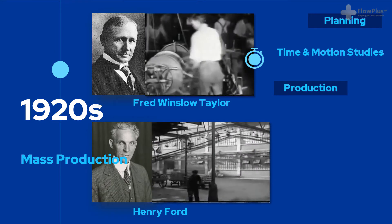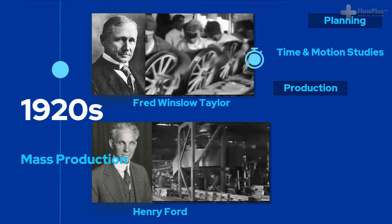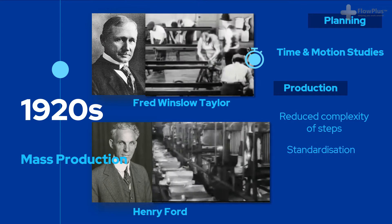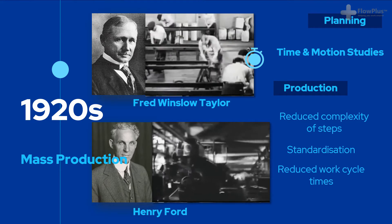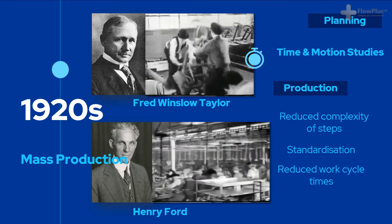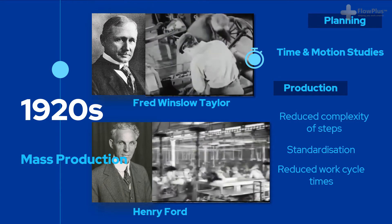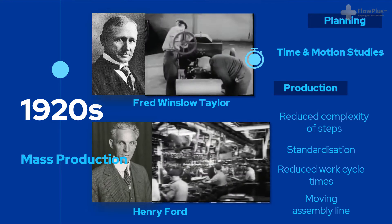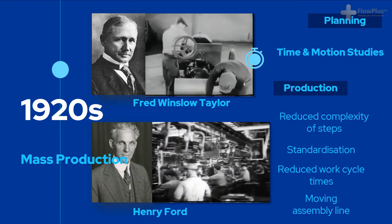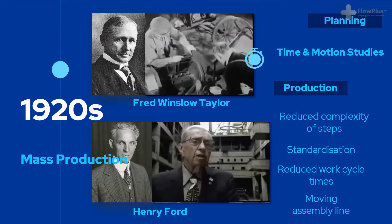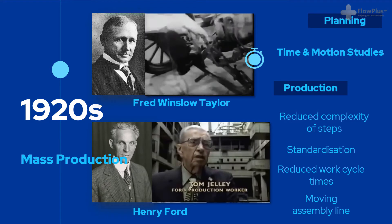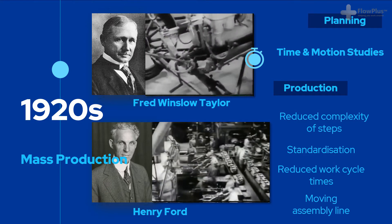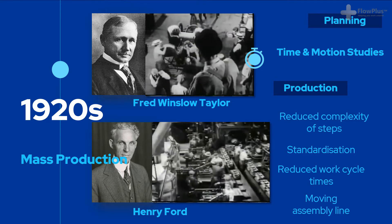Henry Ford then developed on these ideas and decided to make parts highly interchangeable and easy to assemble. By reducing the complexity of steps and standardising dimensions, he eliminated the craftsmanship and revolutionised mass production. He famously reduced the work cycle times of operators from several hours to a matter of minutes, meaning each operator would complete highly repetitive but efficient operations. Henry Ford was the first person to introduce a moving production line — a novel and lean idea. Lean is about reducing waste, improving customer value, and engaging people. He was reducing the waste of motion for operators: instead of having to walk parts to the vehicles, the vehicles would move to the operators.